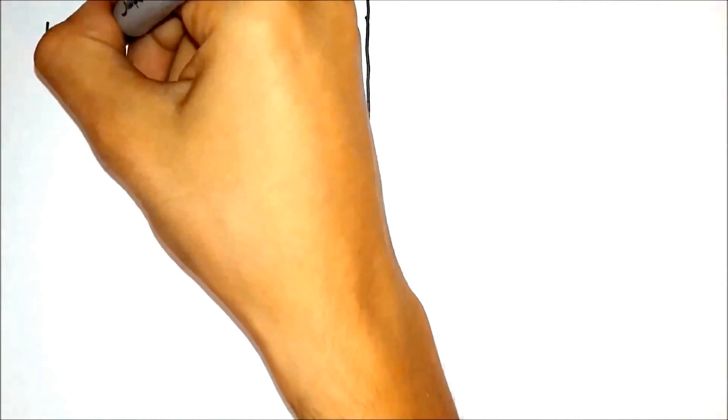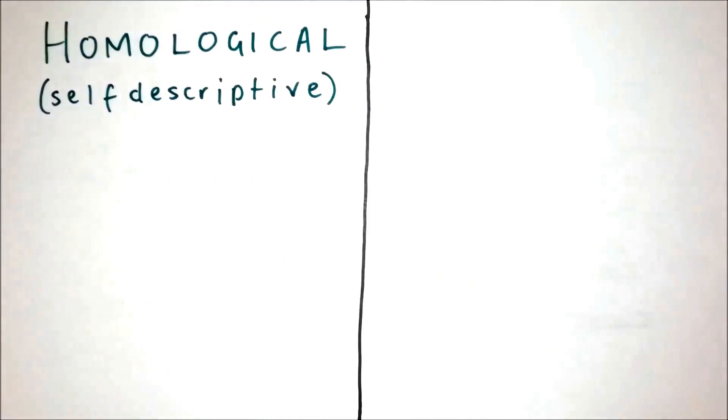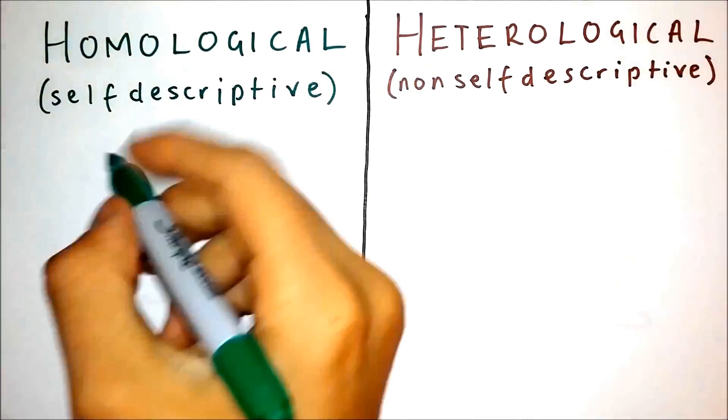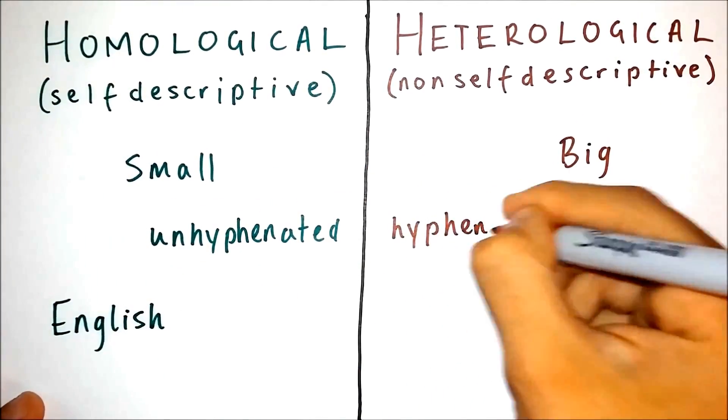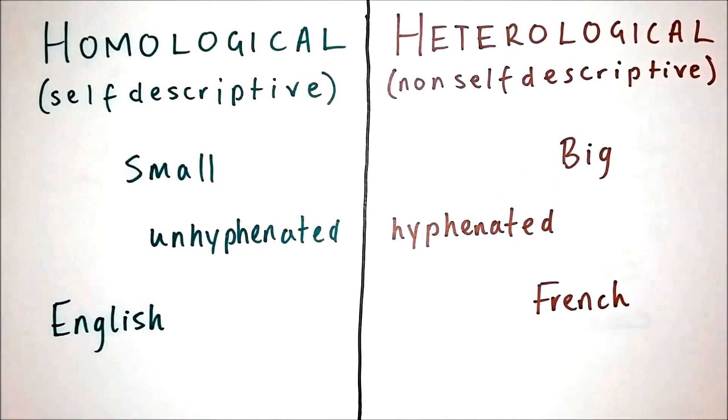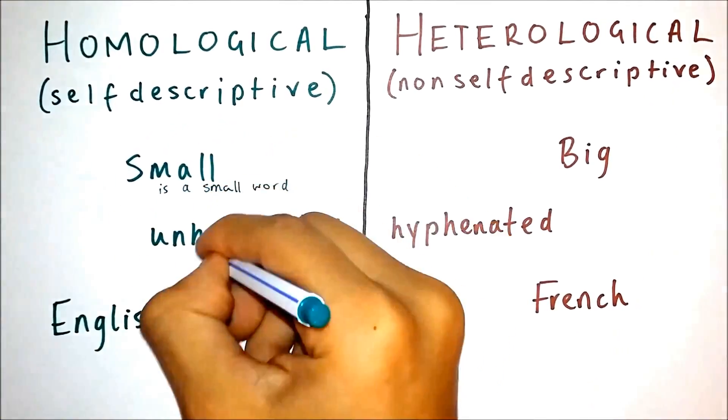The paradox goes like this. The word homological describes words that describe themselves: small, unhyphenated, English, etc. And the word heterological describes words that do not describe themselves: big, hyphenated, French, etc.